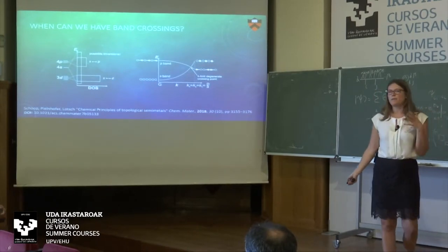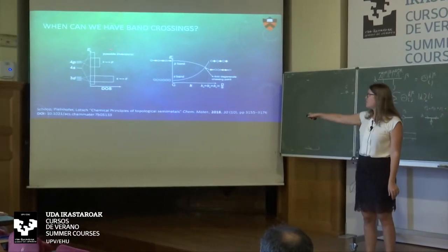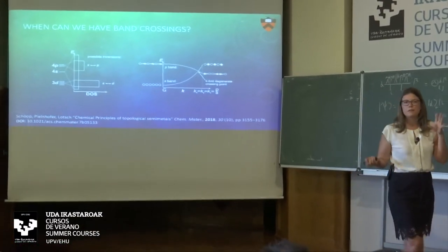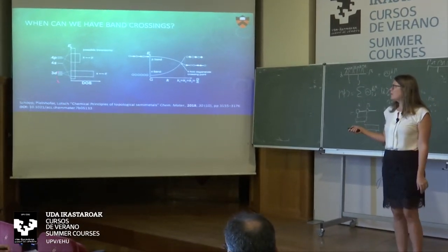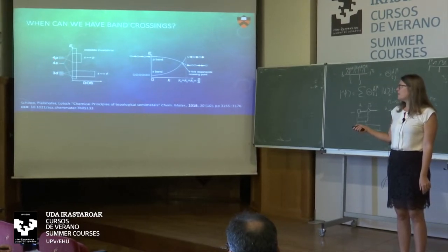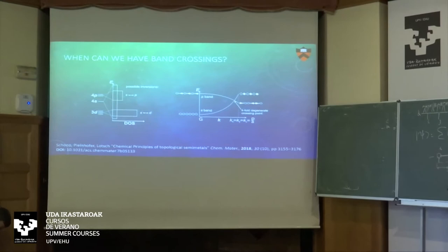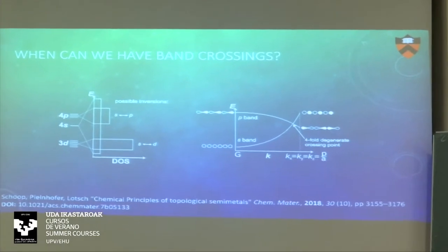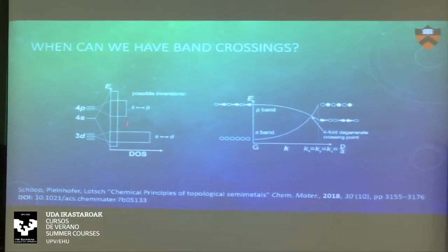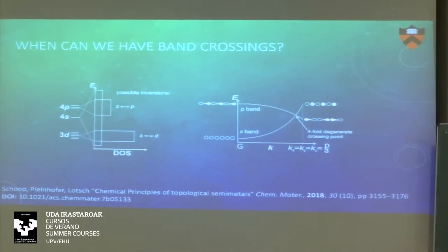Let's think about when we can have band crossings. As chemists we like to think in real space and draw a density of states. If you have a transition metal with orbital shells, chemists learn pretty early that S orbitals split up pretty wide, D orbitals are pretty narrow, and P somewhere in between. If you have any kind of open-shell system — less than 8 or 18 electrons — it's very easy to have band inversions or crossings in a crystal structure. In open-shell systems you're going to have a lot of bands and a very messy electronic structure.